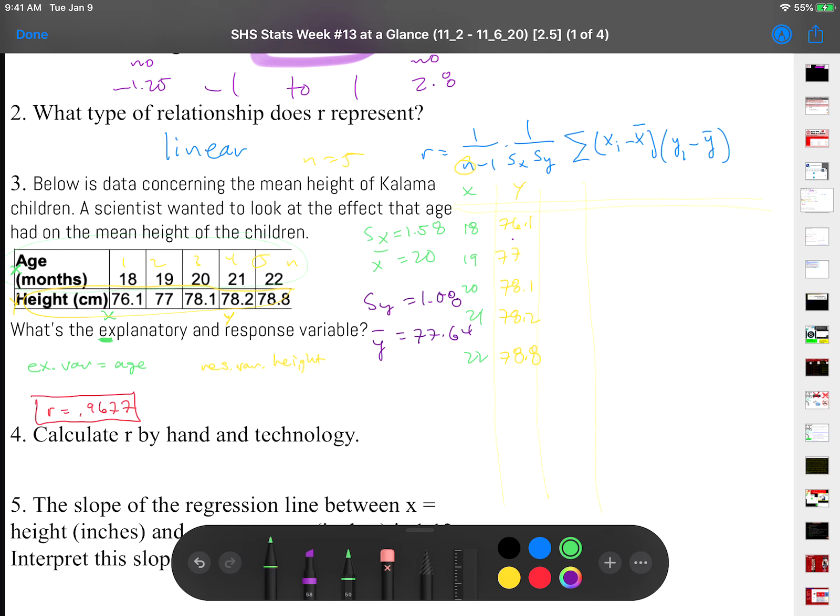In this list, I'm going to subtract each of the X values from the mean. So that's going to be 18 minus 20, 19 minus 20, 20 minus 20, 21 minus 20, and 22 minus 20. So we're going to get some numbers here: negative 2, negative 1, 0, 1, and 2.